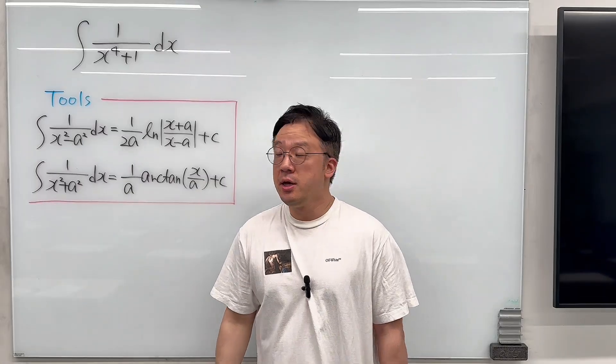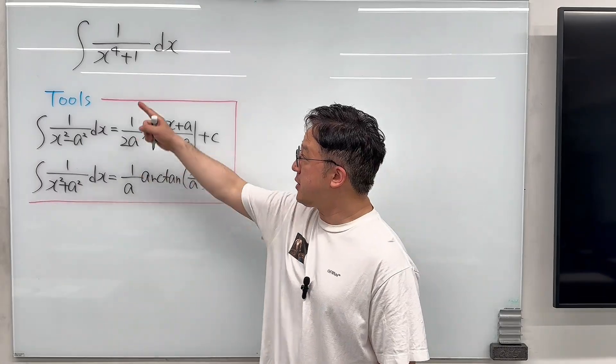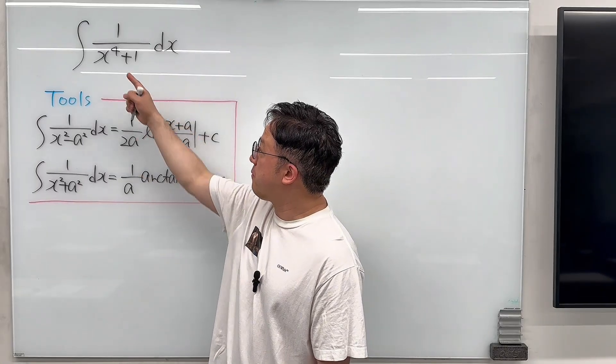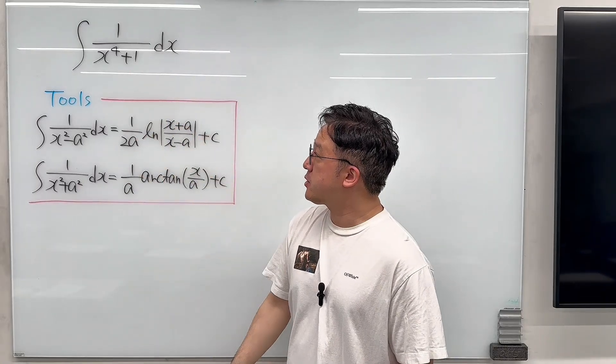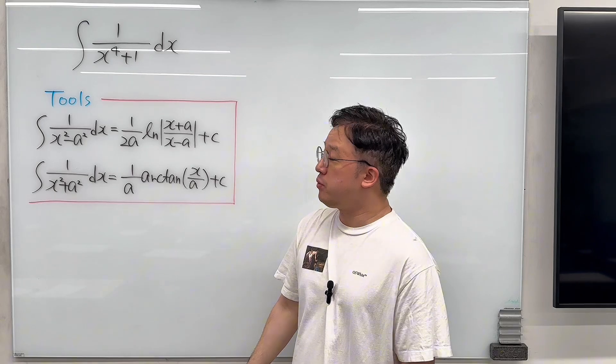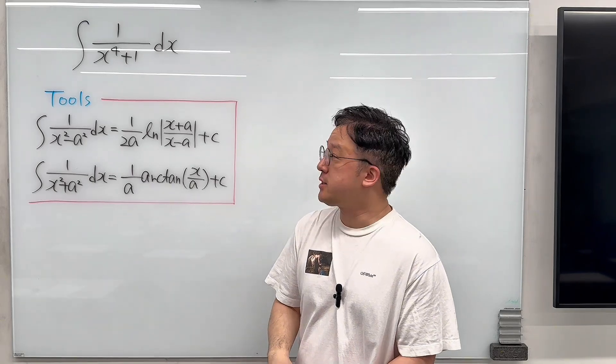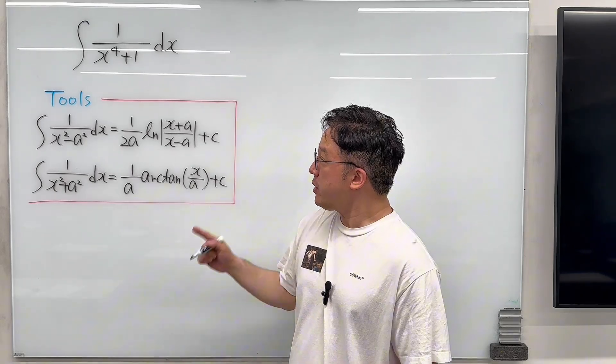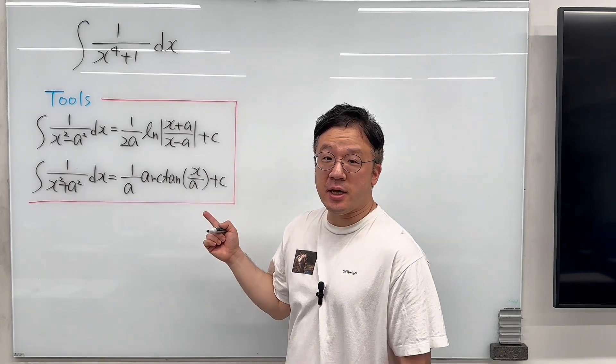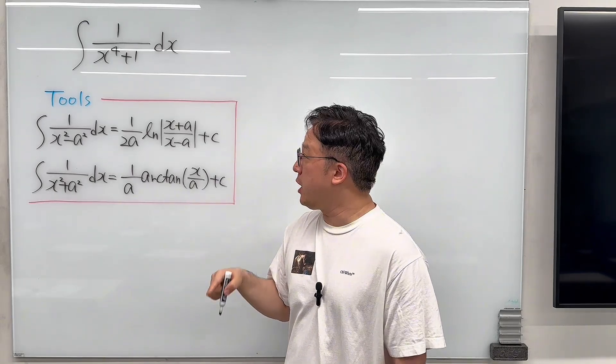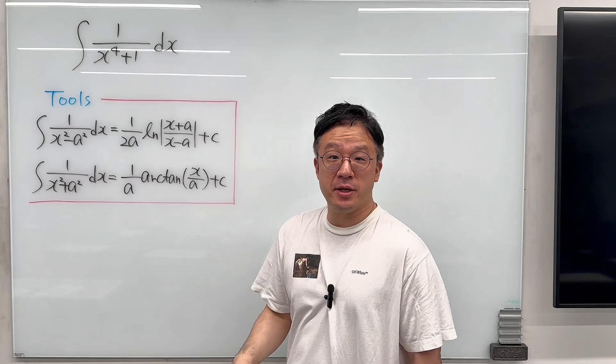Okay, here's the question. The question is this integral of 1 over x to the power of 4 plus 1 dx. I worked on this integral last time, but this time I'll be using complex solutions.